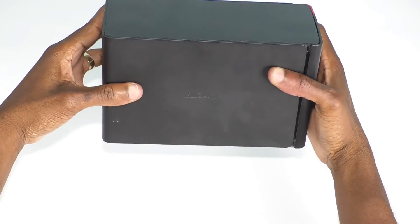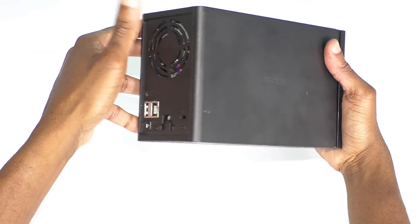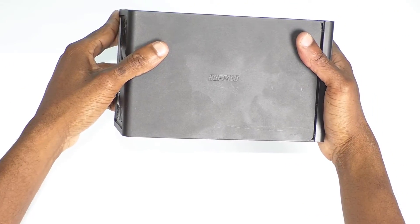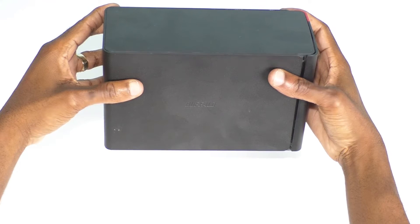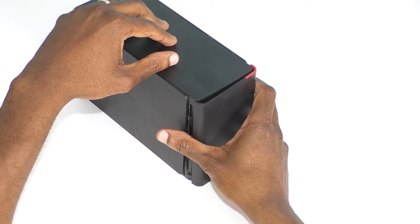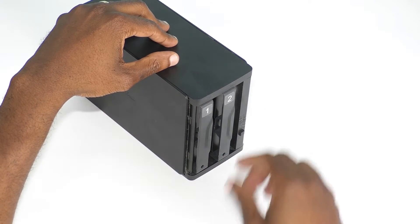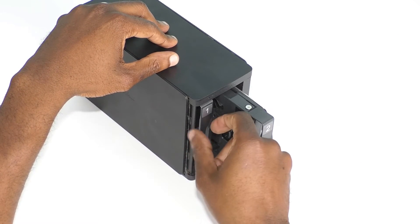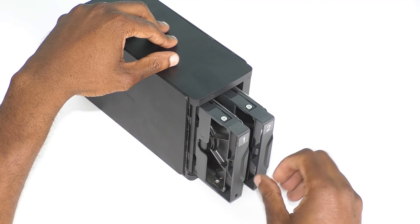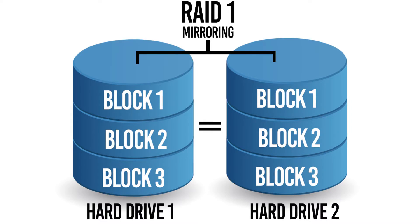Now we are going to look at NAS devices. NAS, which stands for Network Attached Storage, is a storage device which is attached directly to a network. Since some NAS devices are capable of supporting multiple hard drives, you can set up the drives in a RAID 1 array so when information is stored to one drive, the data is simultaneously mirrored to the second hard drive — so if one drive fails, you can still access your data.